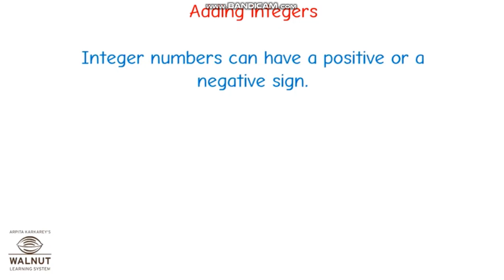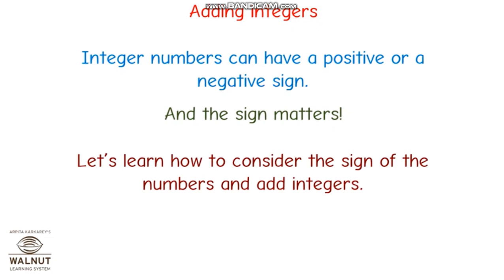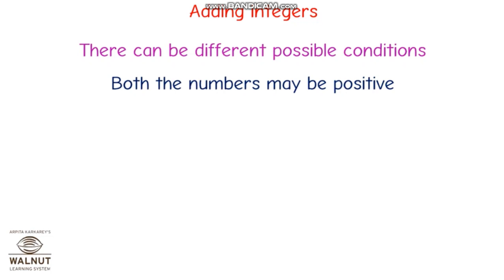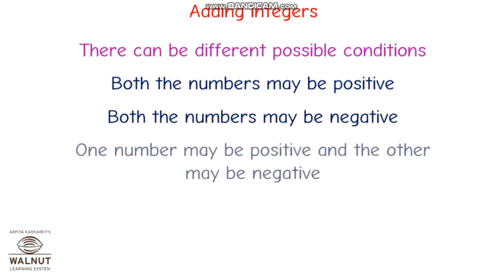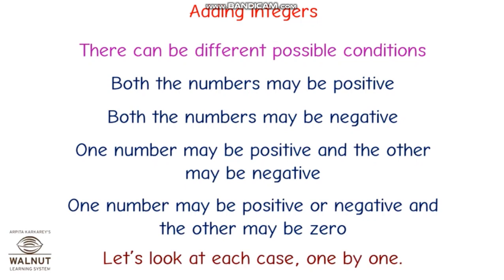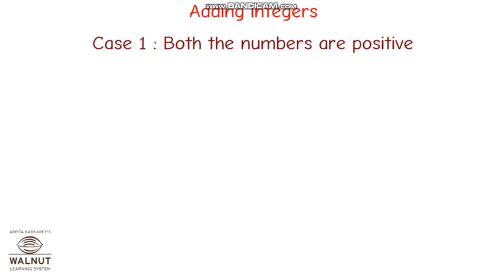In adding of integers, we can face some cases. Integer numbers can have a positive or a negative sign, and the sign matters. There are different possible conditions: first case, both numbers may be positive; both numbers may be negative; one number may be positive and another may be negative; and one number may be positive or negative and the other may be zero. Let's look at each case one by one.